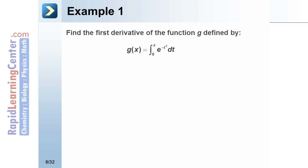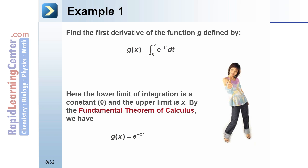Example 1. Find the first derivative of the function g defined by g of x equals the integral from 0 to x of e to the negative t squared. Here the lower limit of integration is a constant and the upper limit is x. By the Fundamental Theorem of Calculus, we have that g prime of x equals e to the negative x squared.